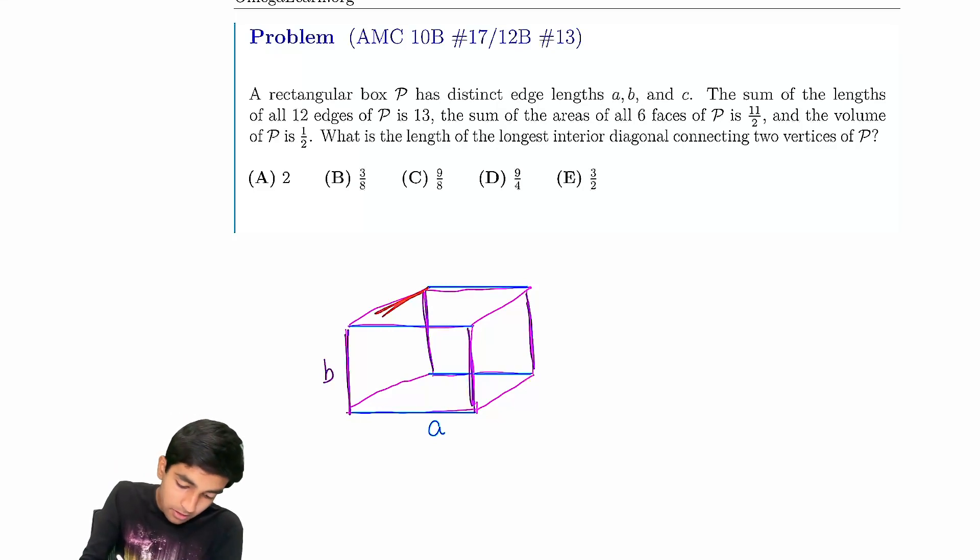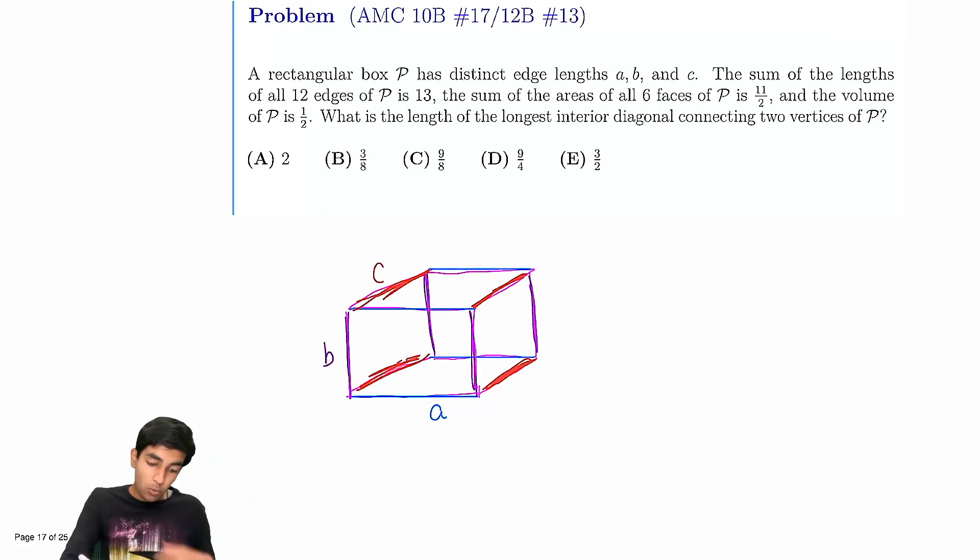And finally, let's call this one c. This is equal to this, equal to that, equal to that. So the sum of all 12 edge lengths—well, we have four of each type—so we have 4(a + b + c) = 13. Therefore a + b + c = 13/4.